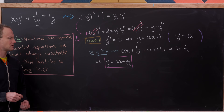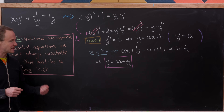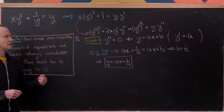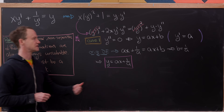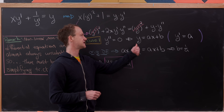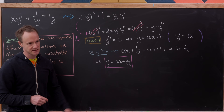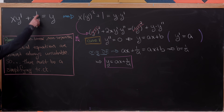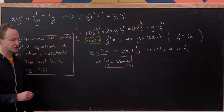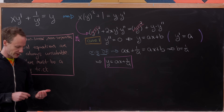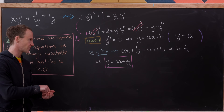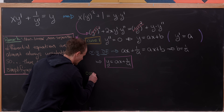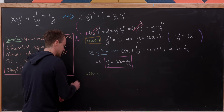You might ask: could a be equal to zero? In fact, a cannot equal zero here. If a equals zero, then y would simply be a constant, which means y prime is zero — and that doesn't make sense in our original differential equation. So we've got our first case taken care of.